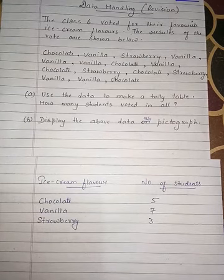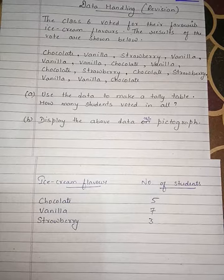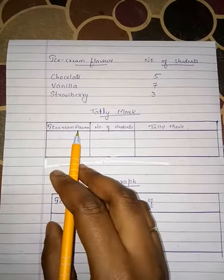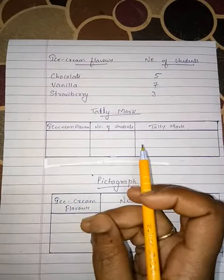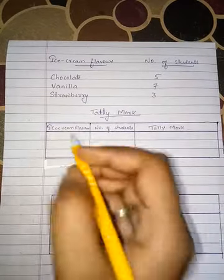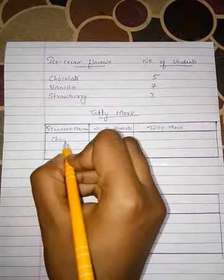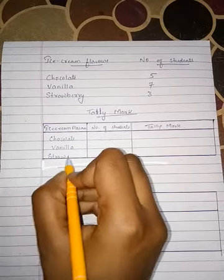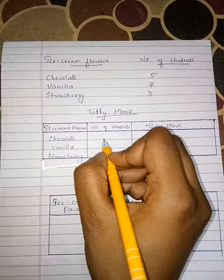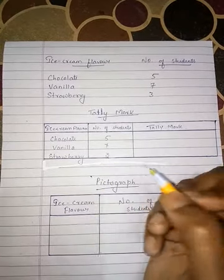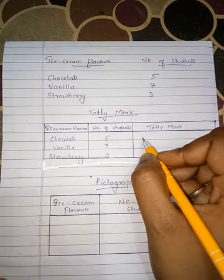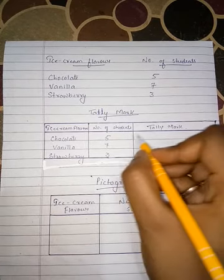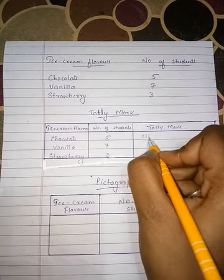First we represent the tally mark table. The chart has columns: ice cream flavor, number of students, and tally mark. We represent tally marks using vertical lines. The flavors listed are chocolate, vanilla, and strawberry. When making tally marks, draw vertical lines, and when 5 is complete, draw a slanting line across. So 5 is represented as a bundle of 4 vertical lines with 1 diagonal.